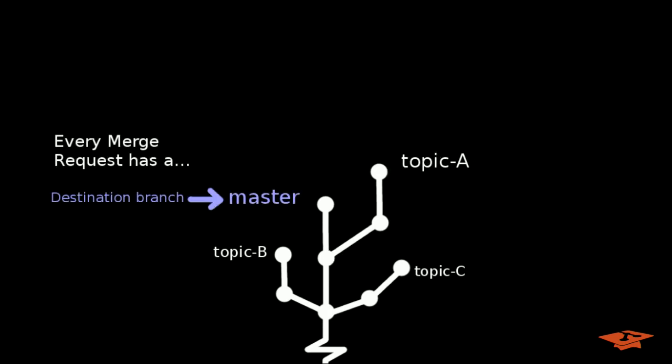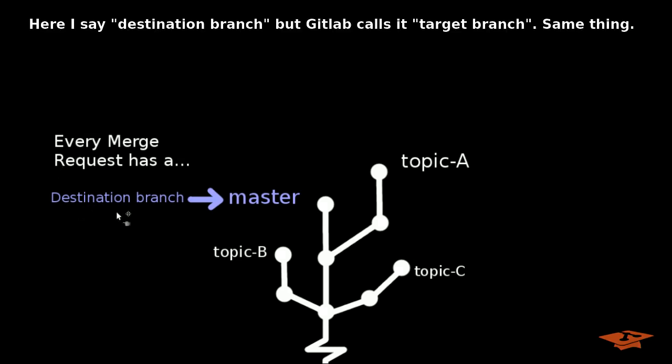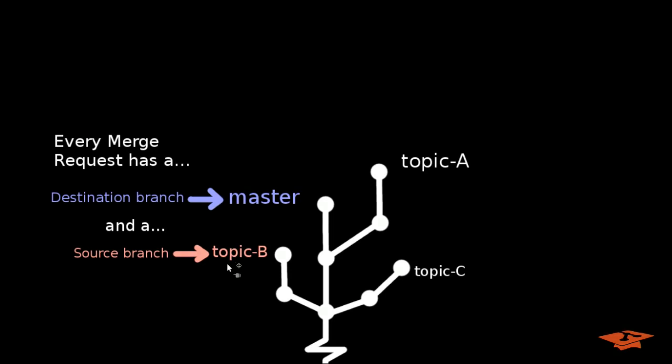If you're familiar with GitLab merge requests, you'll know that every merge request has a destination branch, which I'm going to show in this light blue color, and of course a source branch, which I'm going to show in this pink color.